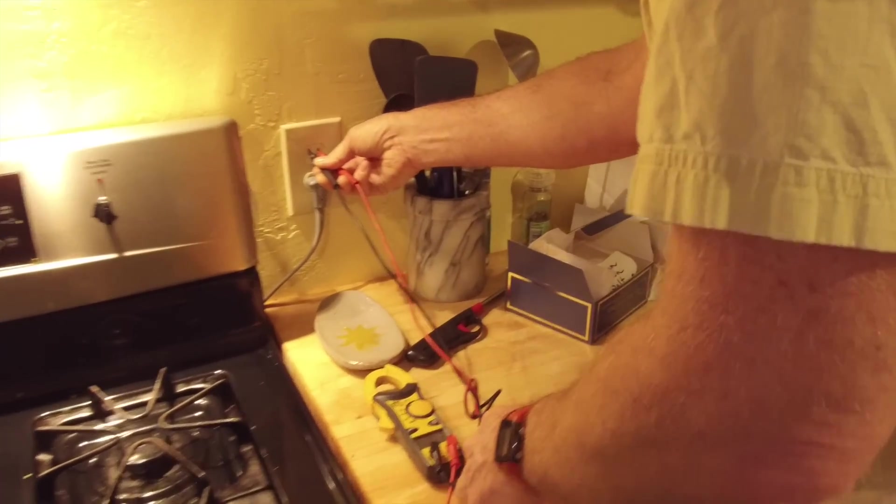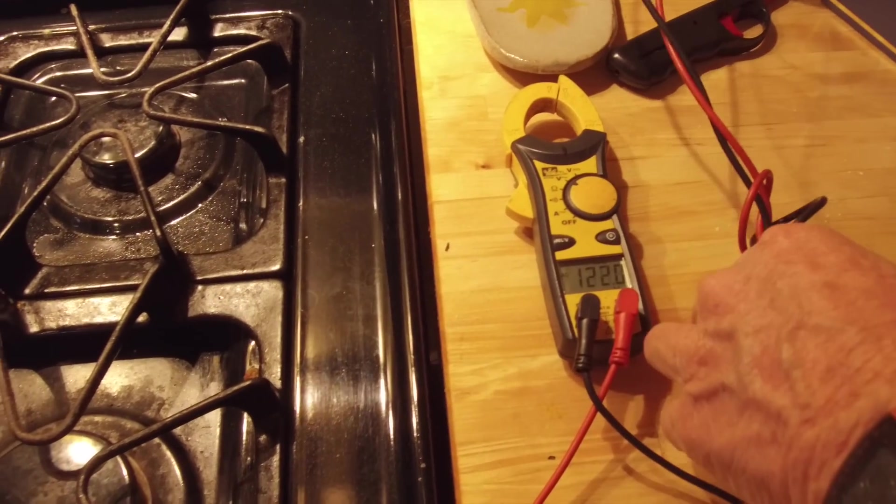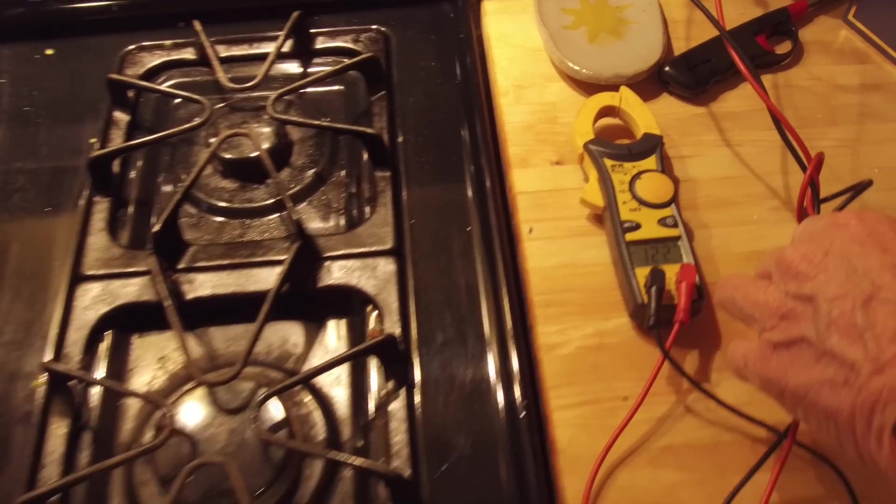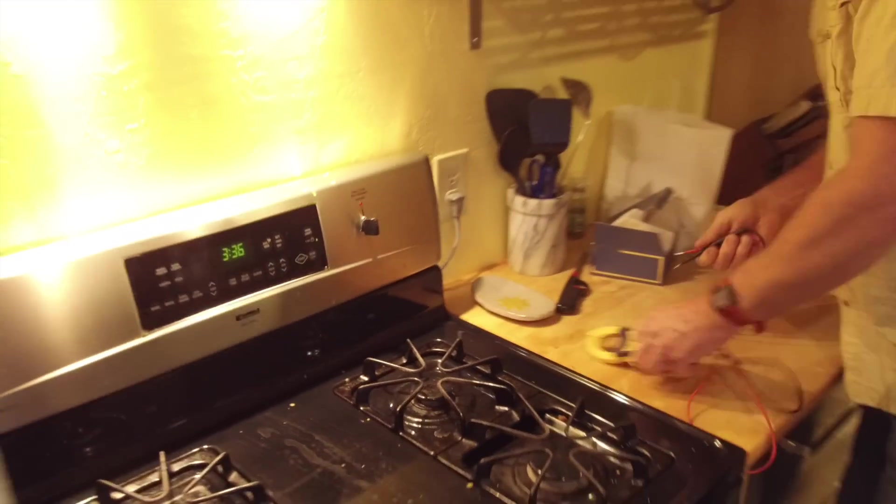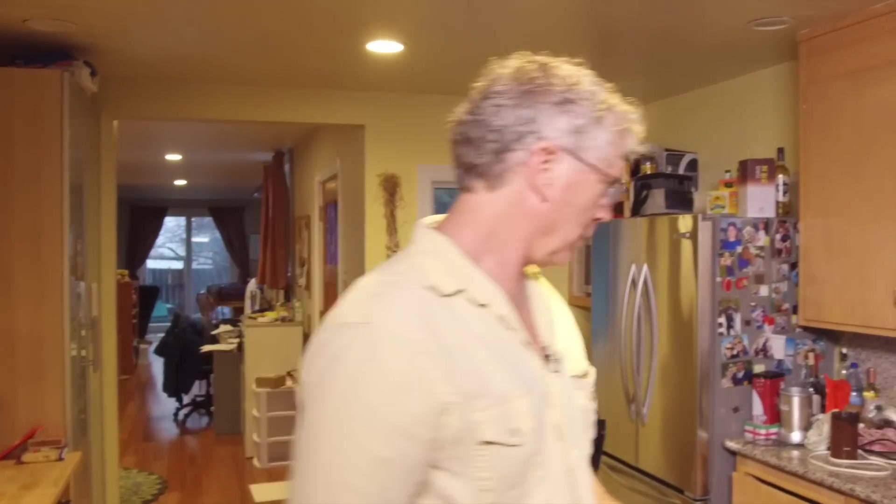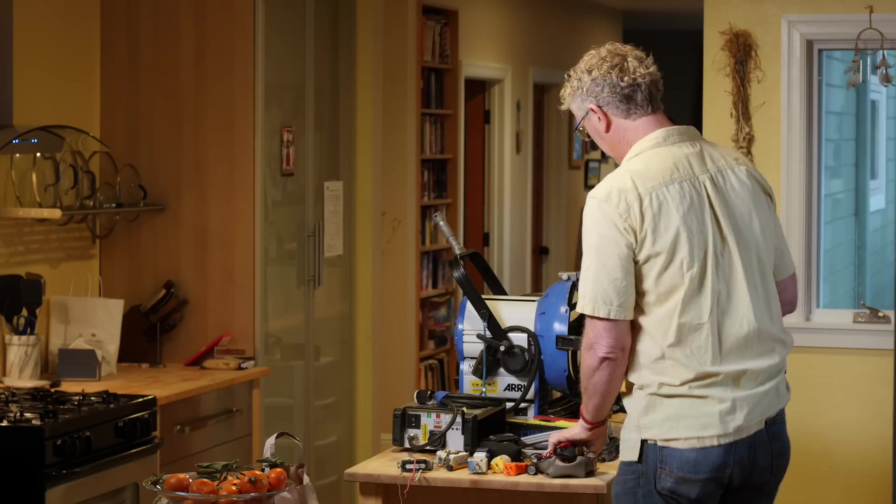And I just stick the two probes right in there, and we can see that we have, it jumps around a little bit, 122.7 volts. That's very typical PG&E power in San Francisco. You get 121, 122 volts. All right, enough of that.